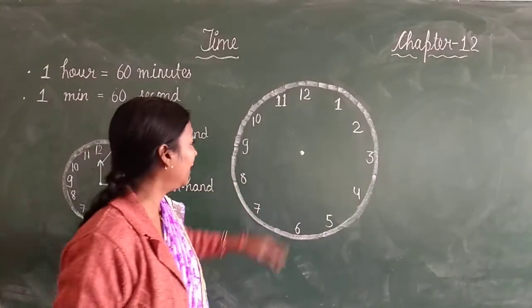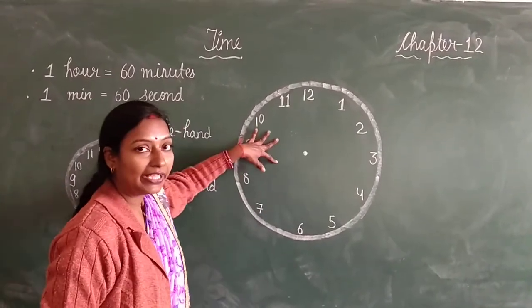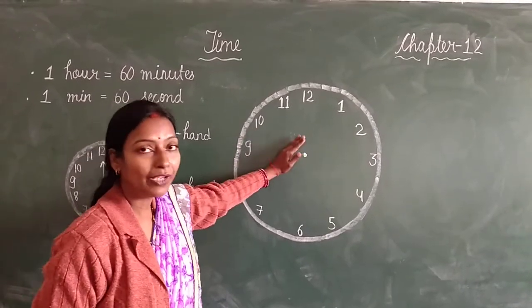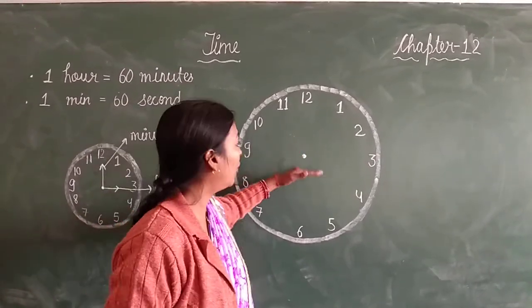This is a watch. Now you will see there are no hands drawn yet. Then I will tell you what the long hand does and what the short hand does.